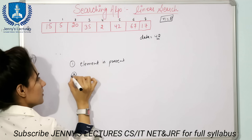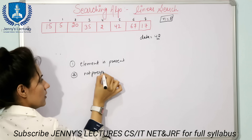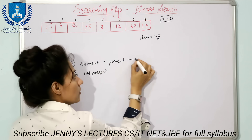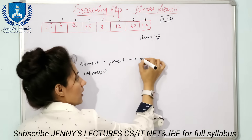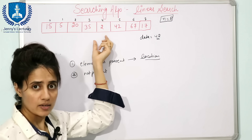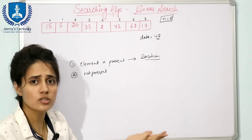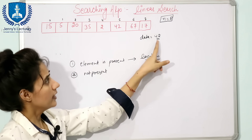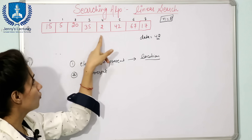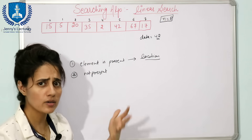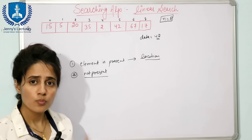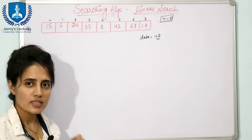Here two cases are there. One is the element is present in the list, and second is it is not present. If the element is present, you want to print the location — at which index or which position the element is present. The index for 42 is 5, and the position is the 6th. If the element is not present, your program should print 'element not found'.